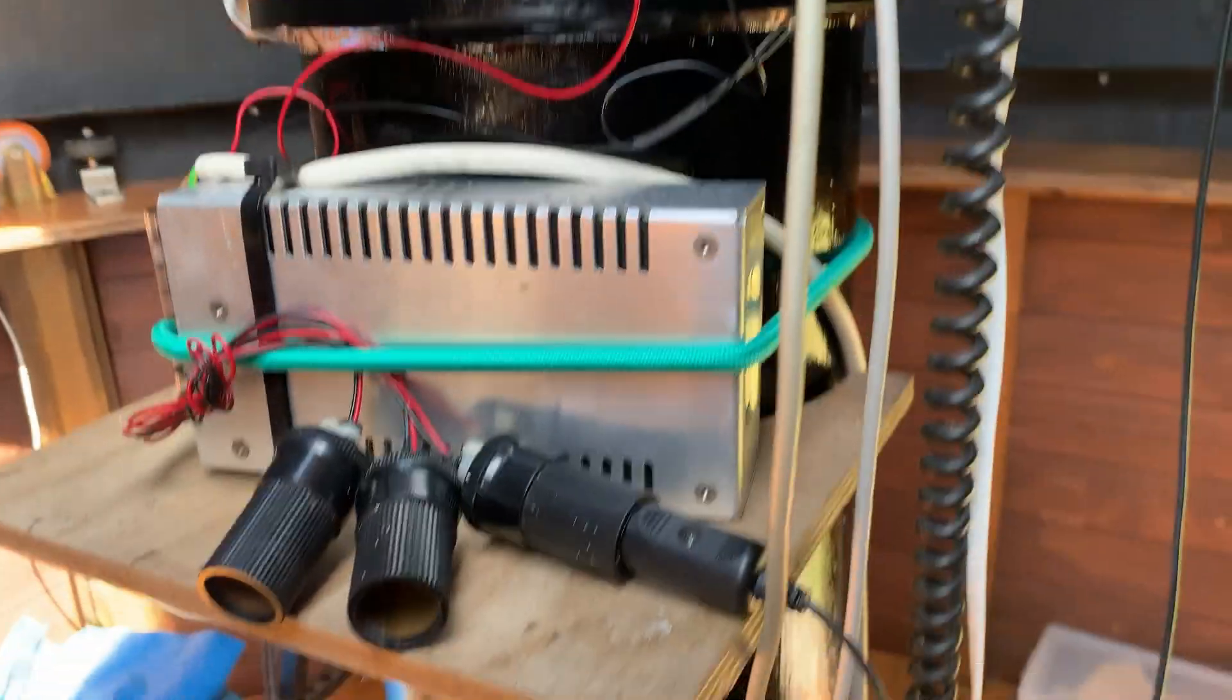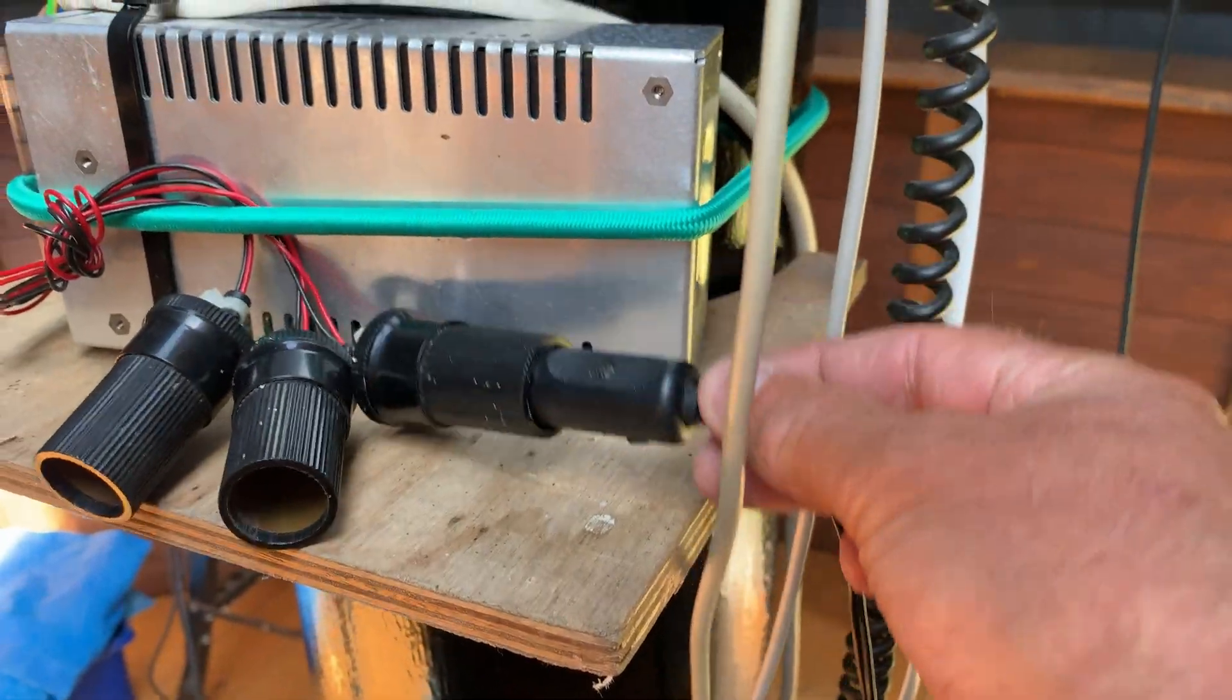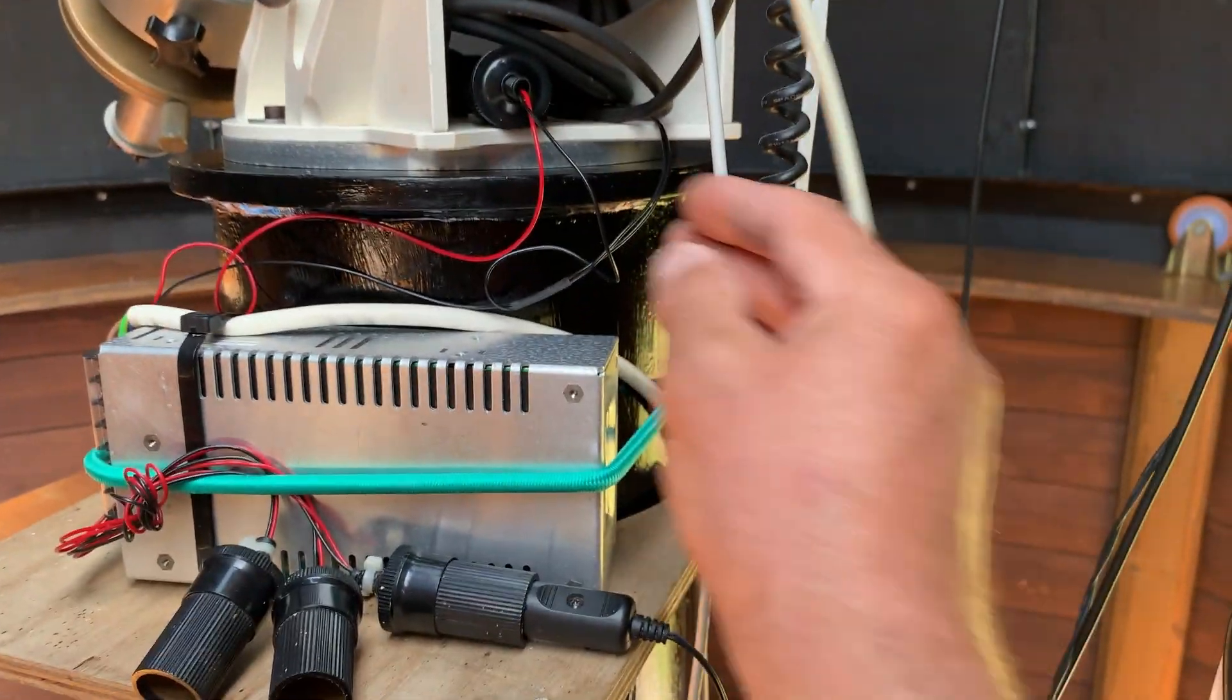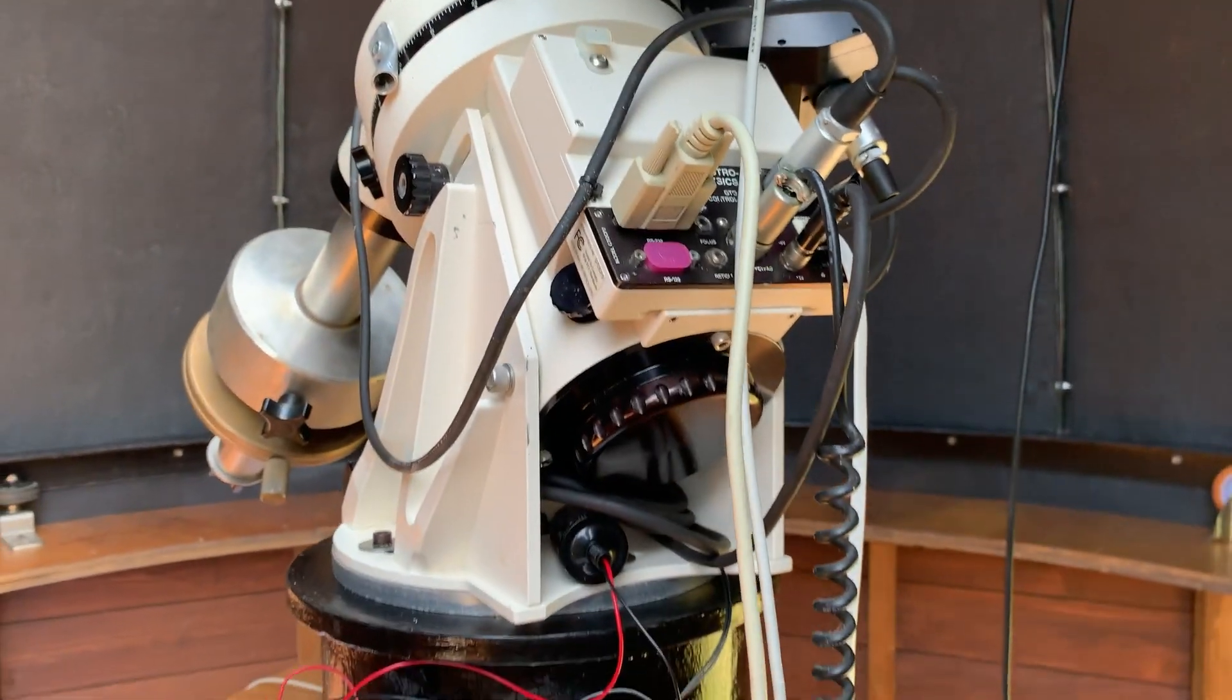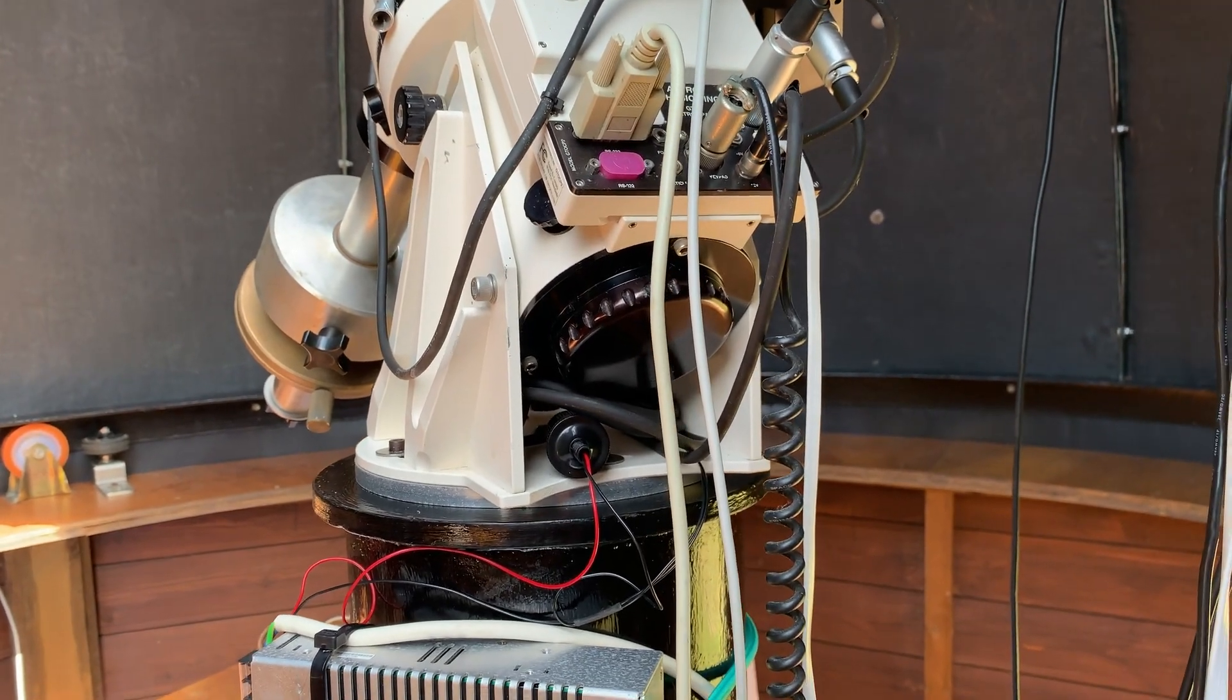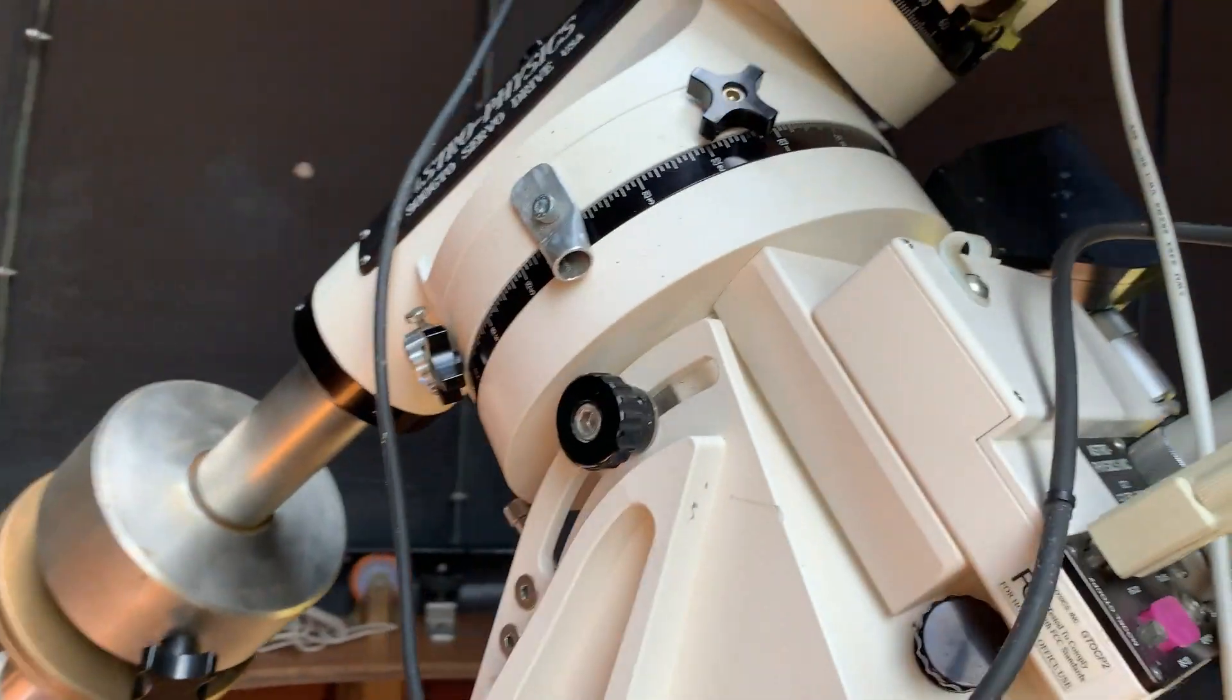Here's the camera power, these are all 12 volts. This is a big 12 volt supply. This one here goes through that limit switch and that's the one that's powering the mount. I'm only interested in knocking the power off the mount if something goes wrong.